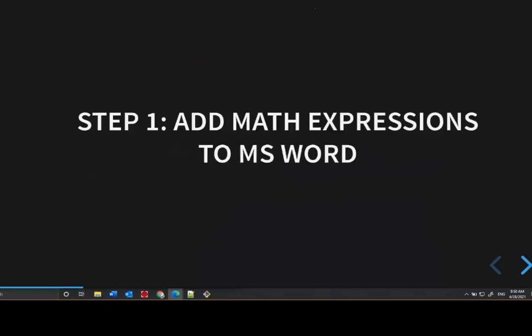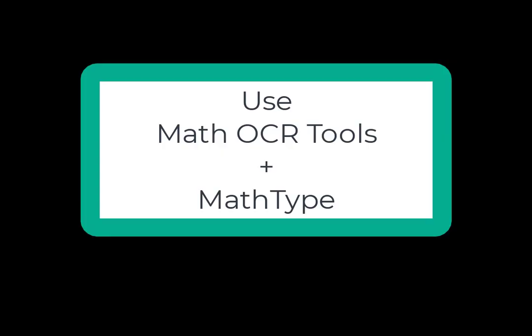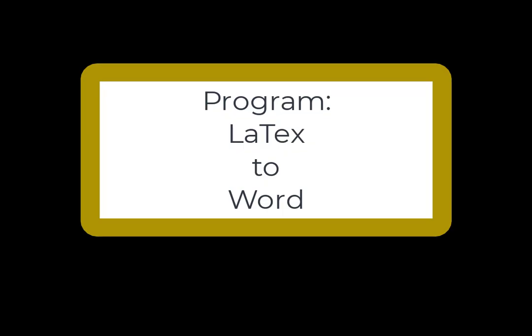Step one — adding math expressions to Microsoft Word — can vary depending on the source file we receive. In most cases, the math documents we're converting are PDF files that professors have uploaded into the LMS. These are not documents professors have authored themselves, so we cannot obtain original source files like Microsoft Word or LaTeX. Our process is to use a combination of math OCR tools plus MathType to create the accessible equations in Word. If faculty author in LaTeX, we can use a program like LaTeX to Word to convert the LaTeX document to a Word document with Office Math.